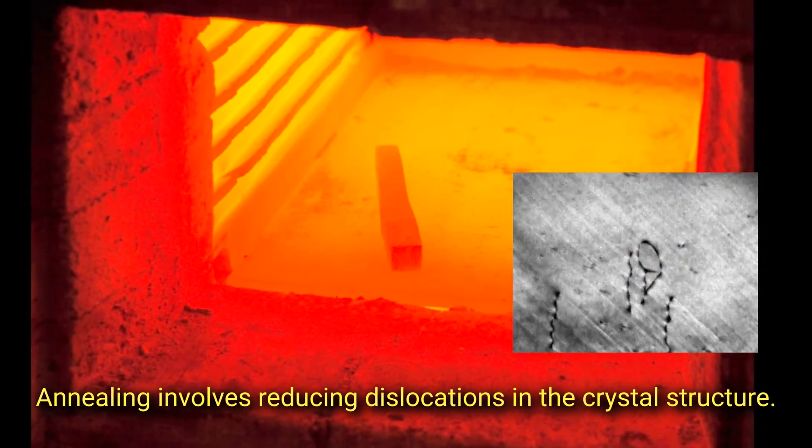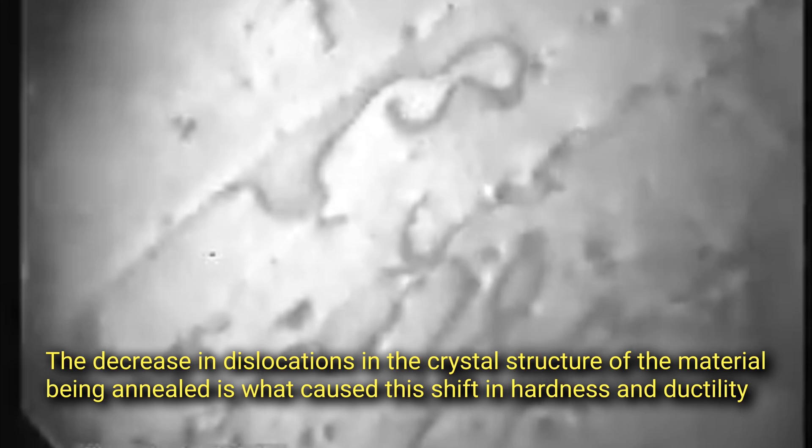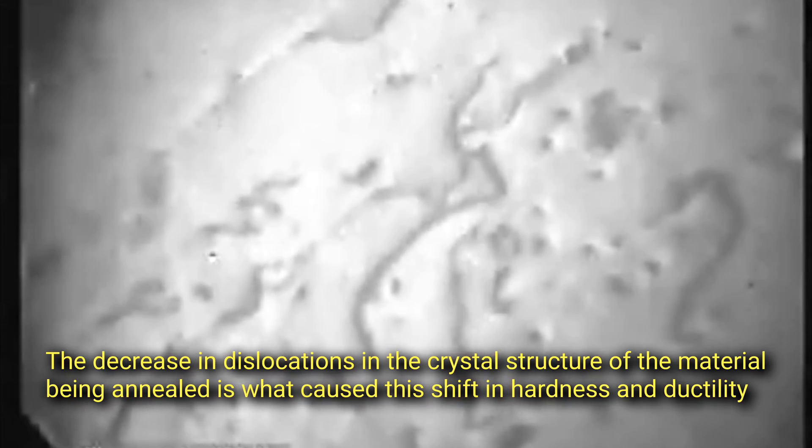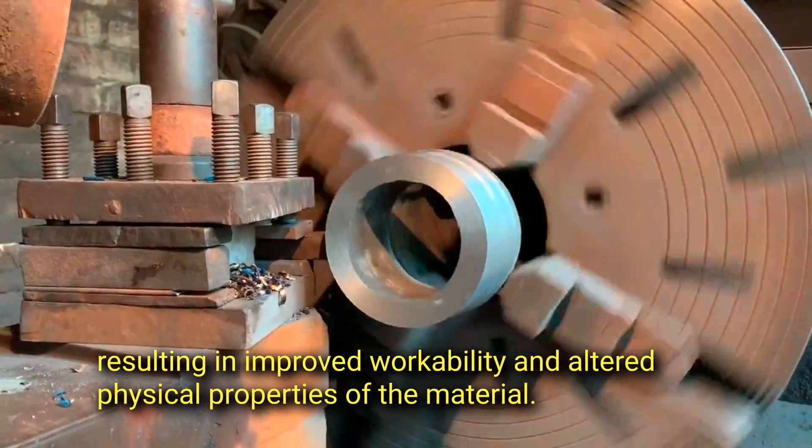Annealing involves reducing dislocations in the crystal structure. The decrease in dislocations in the crystal structure of the material being annealed is what causes this shift in hardness and ductility, resulting in improved workability and altered physical properties of the material.